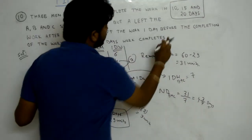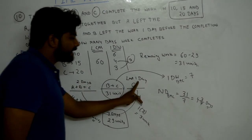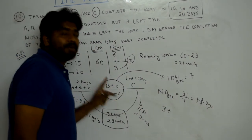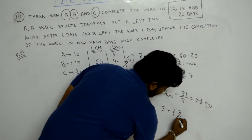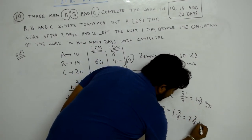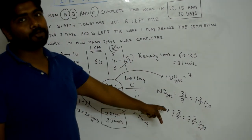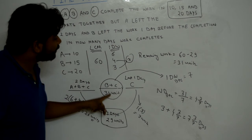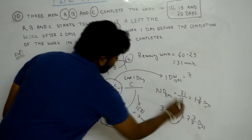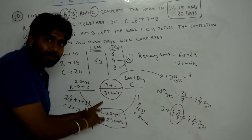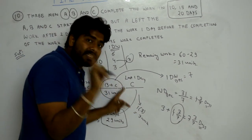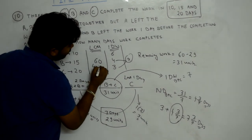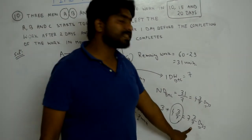The total days for the work to be completed is: first 2 days plus 4 and 3/7 days plus the last 1 day, that is 3 plus 4 and 3/7, which equals 7 and 3/7 days. In the first 2 days A, B and C worked together; in the next 4 and 3/7 days B and C worked; and on the last day only C worked, completing the entire 60 units of work.